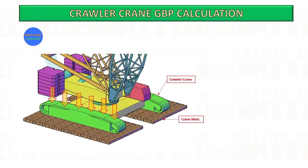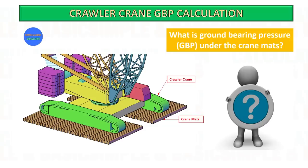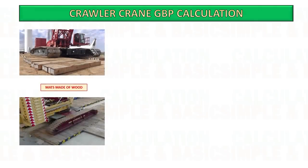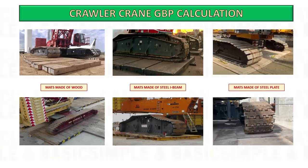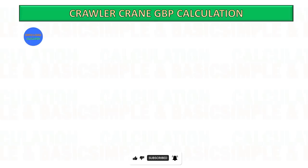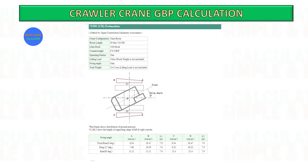By calculating the suitable size of mats for lifting operation and knowing the GBP beneath the mats, we can do the necessary preparation on the ground on site. Presented below are several sample images showcasing typical mat support found beneath the crawler track — mats constructed from wood materials, mats constructed using I-beams joined together through welding, and additionally a steel plate placed under the crawler track.